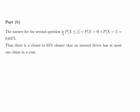The second question is, what is the probability of x less than or equal to 1? That is the probability of x equal to 0 plus the probability of x equal to 1. So essentially, you just add those two numbers together, we get 0.6475. So there's close to 65% chance that the insured driver has, at most, one claim in a year.